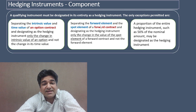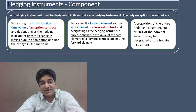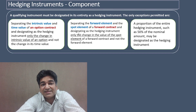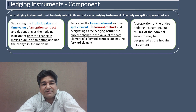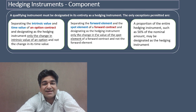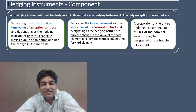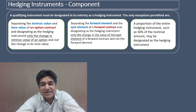Exception number two: in the case of a forward contract, there is a forward element and a spot element. Ind AS 109 says you can separate the forward element and the spot element of a forward contract and designate only the change in the value of the spot element as a hedging instrument — and not the forward element.